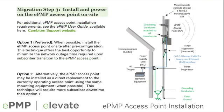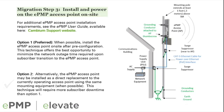Step three, installation of the ePMP access point, involves two options. Option one includes co-locating the access point with the current fielded access point, allowing operators to simply power down the original equipment and power on the new ePMP access point. If additional mounting space is not available, operators may choose to replace the original access point with ePMP using the same mounting structures.